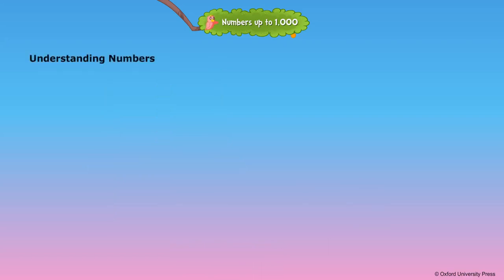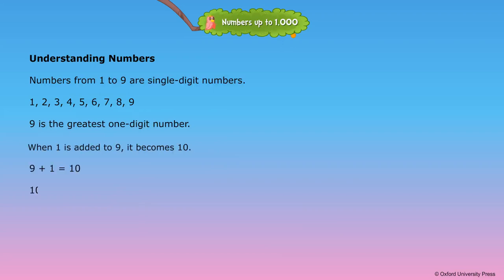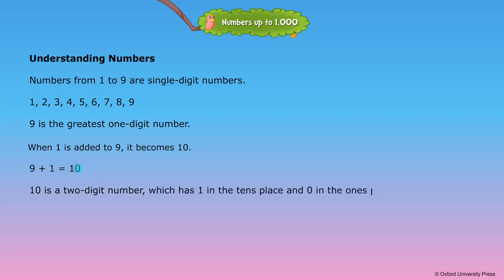Understanding numbers: numbers from one to nine are single digit numbers. Nine is the greatest one digit number. When one is added to nine it becomes ten. Ten is a two digit number which has one in the tens place and zero in the ones place.